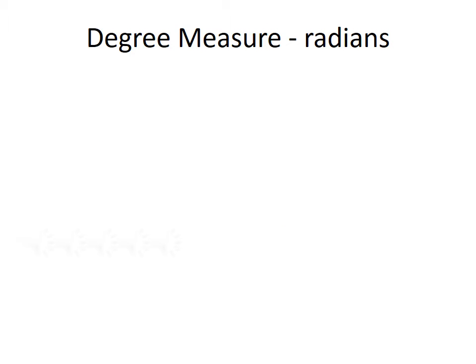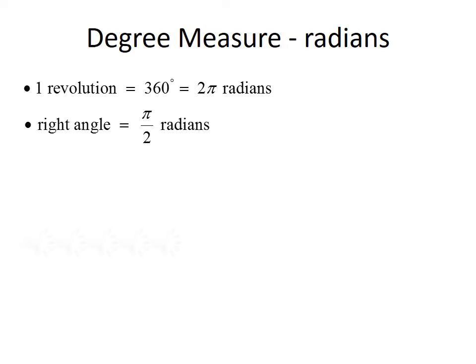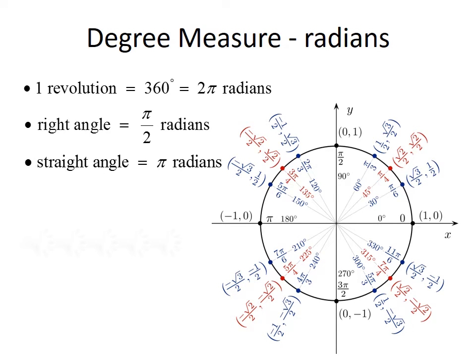Another way to measure angles is in radians. One revolution is 360 degrees, but one revolution is also 2π radians. A right angle, which is 90 degrees, measures π over 2 radians. A straight angle of 180 degrees equals π radians. If we look at the unit circle, most unit circles have both degrees and radians marked. For example, a 45-degree angle is the same as an angle of π over 4 radians.